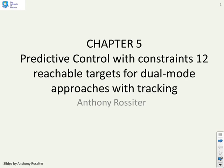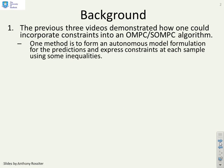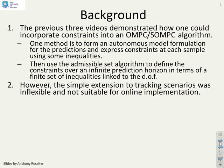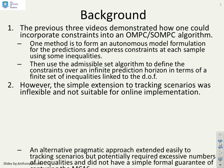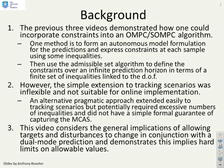This video discusses the concept of reachable targets for dual-mode approaches. The previous three videos demonstrated how to incorporate constraints into an OMPC-type algorithm, using an autonomous model formulation for predictions and expressing constraints at each sample using inequalities. An admissible set algorithm was used to define constraints over an infinite horizon using a finite set of inequalities. However, the extension to tracking scenarios was found to be inflexible and not suitable for online implementation. An alternative pragmatic approach was proposed, but it potentially required excessive numbers of inequalities and did not formally guarantee capturing the MCAS. So the question now is: can we do better?